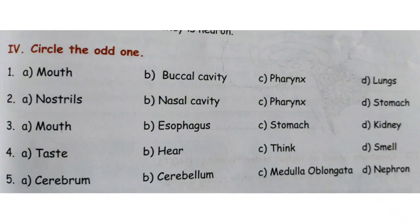Number 3: A: mouth, B: esophagus, C: stomach, D: kidney. Mouth, esophagus, and stomach are the digestive system. Kidney is not — so the answer for question 3 is kidney.